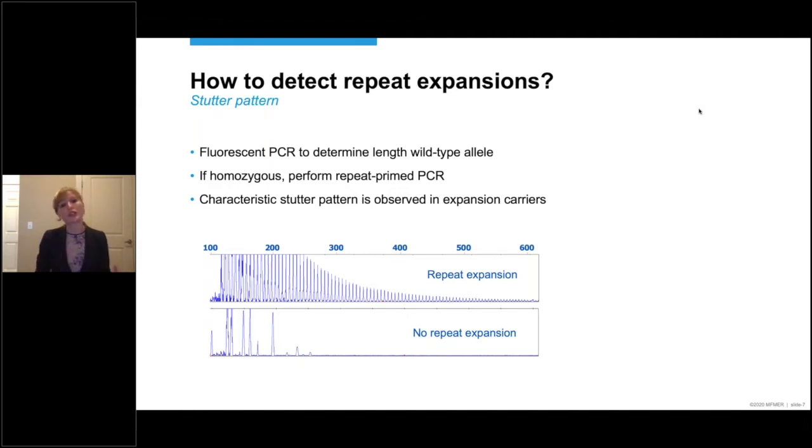That's normal, and no additional testing is required. If, however, you see a single peak, then there could be multiple explanations. It's possible that you carry two repeats on one allele and two repeats on the other allele as well. It's also possible that you carry two repeats on one allele and a very long repeat expansion on the other allele, but it's so long that you can't detect it using a fluorescent PCR. Consequently, the next step is a repeat-primed PCR.